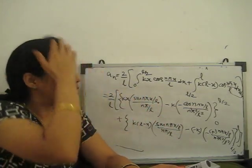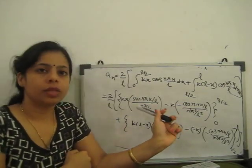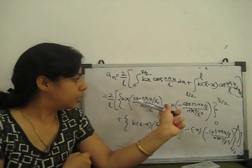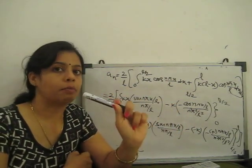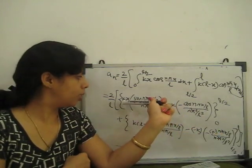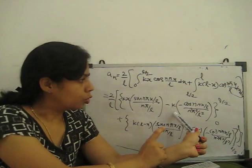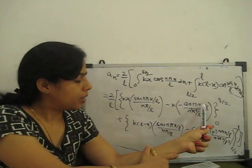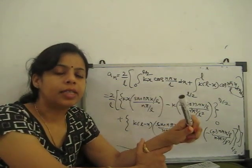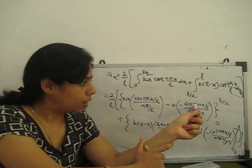Applying the limits: for the sine terms, sin(nπ/2) appears at x = l/2, and sin(nπ) = 0 at the upper limit of the second integral. For the cosine terms, cos(nπ/2) and cos(nπ) appear. When n is even, sin(nπ/2) gives values, but when n is odd, certain terms vanish. The sin terms at l/2 give sin(nπ/2).